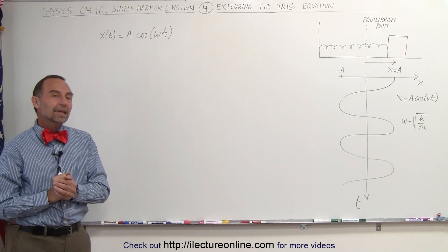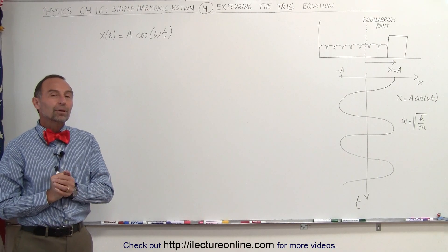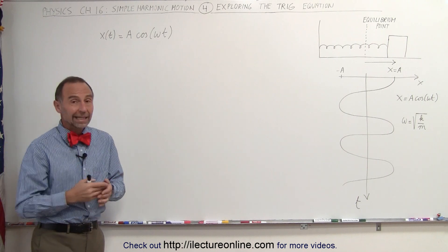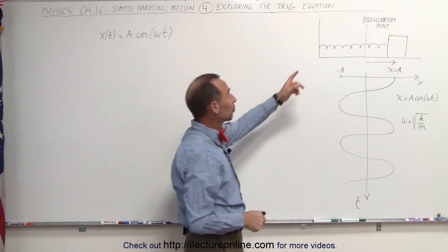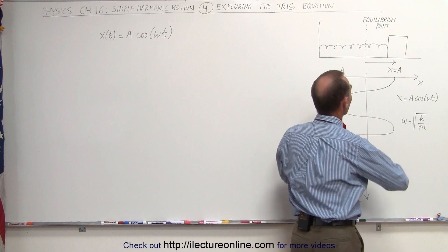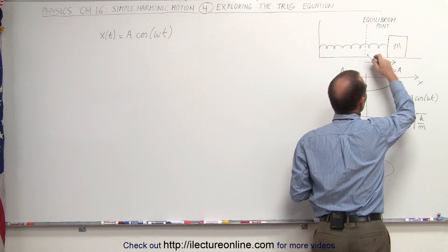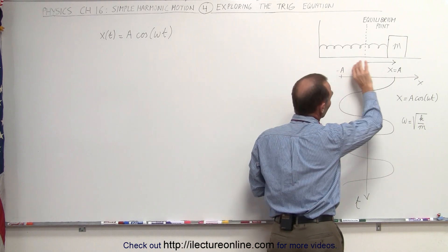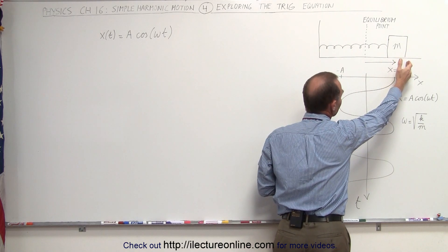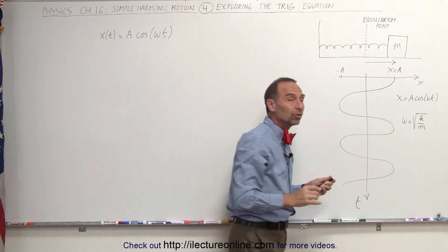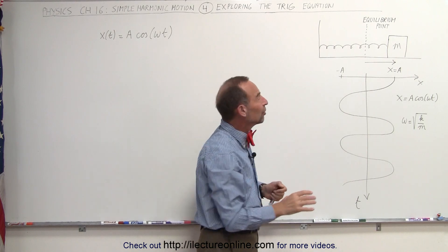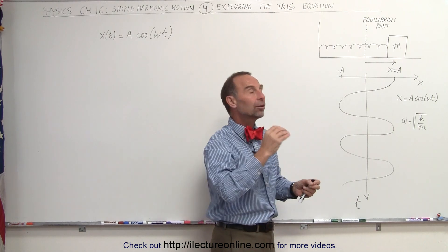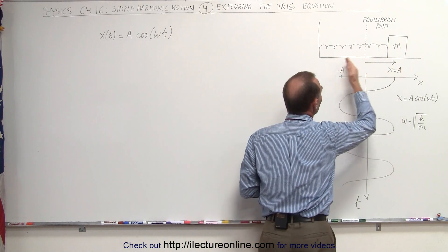Welcome to Electron Online. Let's explore the trigonometric equation that defines simple harmonic motion, especially in the case of a spring and an object with mass. Assuming the surface is frictionless, so there's no energy loss, we pull the block out to a certain distance a, storing potential energy equal to one-half k a squared, then let go so the block begins to move back and forth.